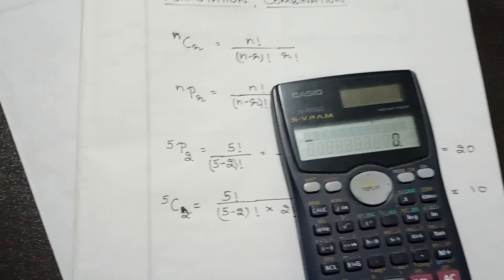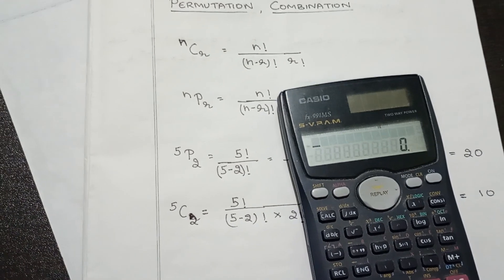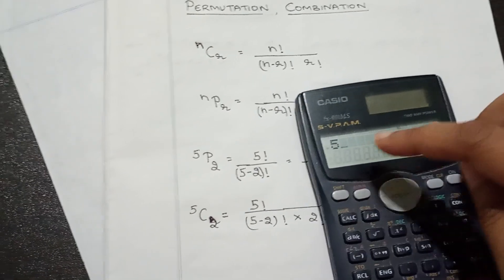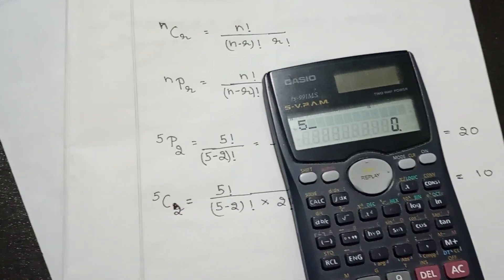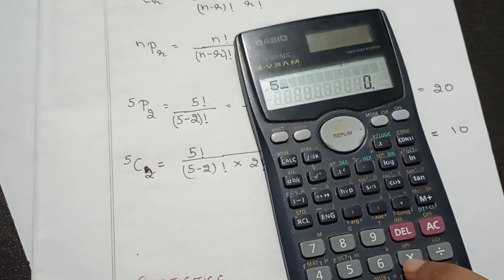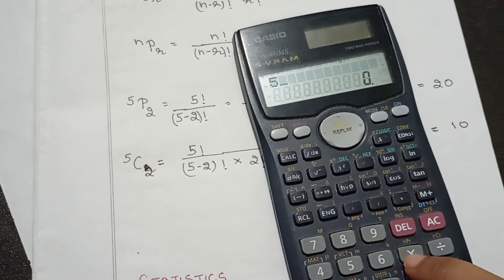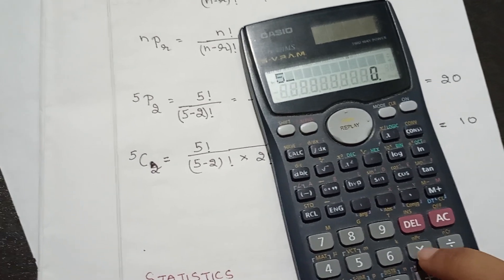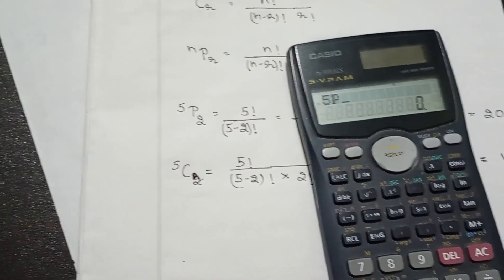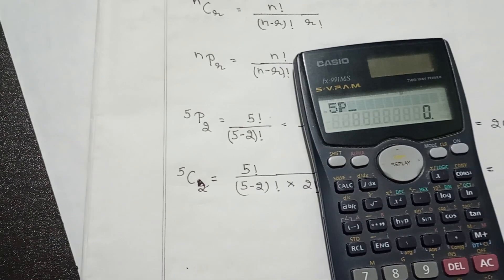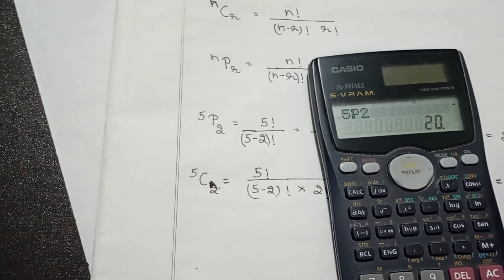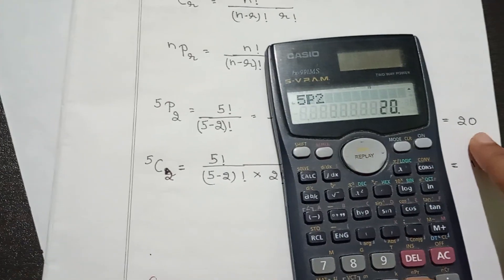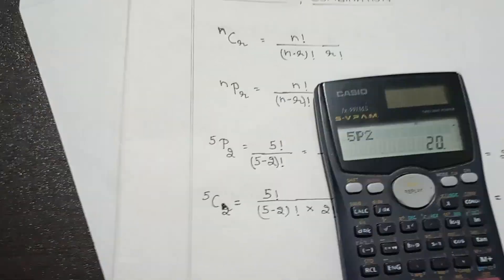For 5P2 (NPR), press 5, then Shift and the multiplication sign to get P — that is NPR — then type 2 and press equals. This gives the same result as the manual calculation.